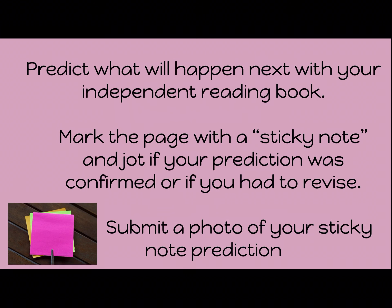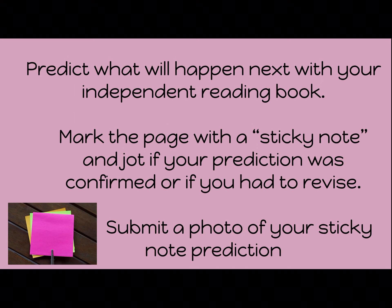Today you're going to predict what will happen next with your independent reading book. You're going to mark the page with a sticky note and jot if your prediction was confirmed or if you had to revise. First, jot your prediction on the sticky note. Think about the characters, what you know about them, the problems, and how stories usually go to make a strong prediction. Then read on to see if it was confirmed or if you need to revise your thinking.